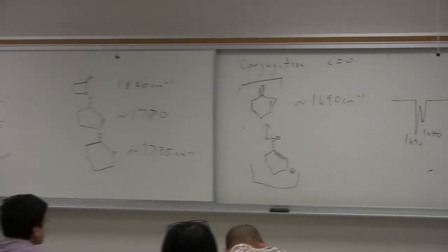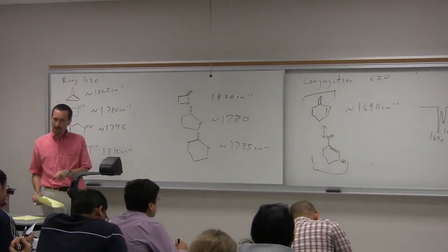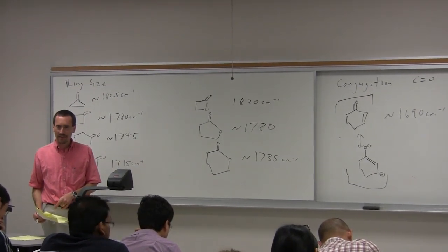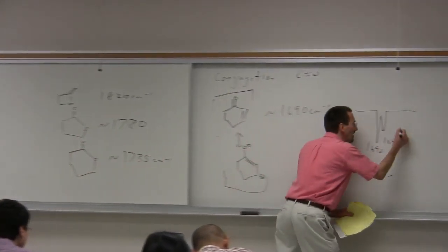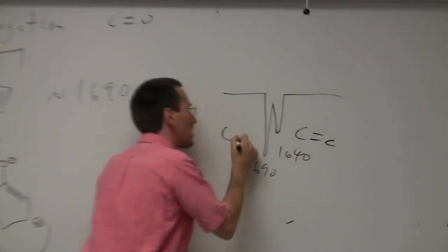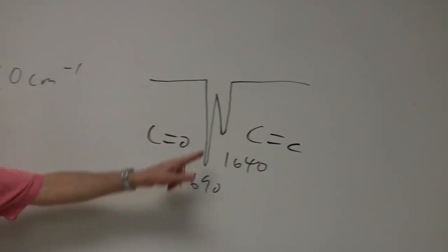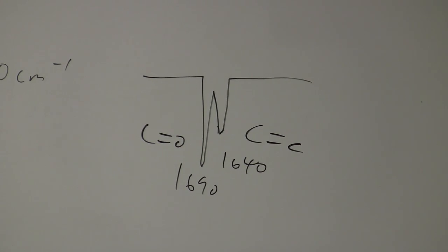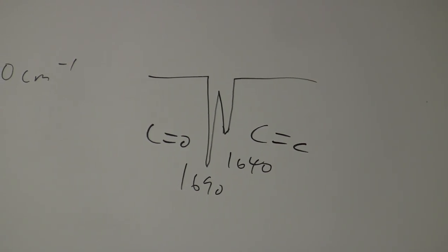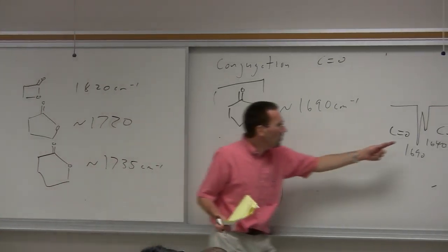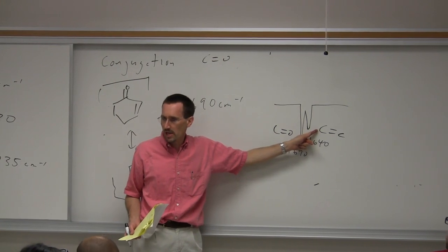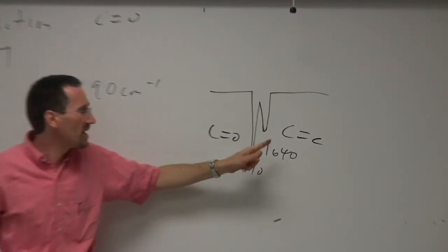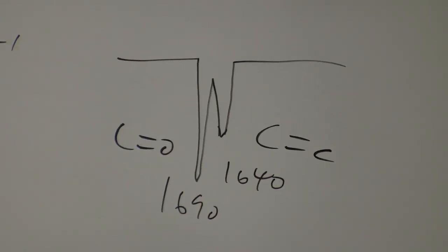For an alpha,beta-unsaturated compound, you'll see a band at about 1,690 and a band at about 1,640 cm⁻¹ — one for the CO stretch and one for the CC alkene stretch. Because the alkene is polarized by the conjugation, there's a bigger change in dipole moment as you vibrate it, so the alkene CC stretch will be fairly strong.